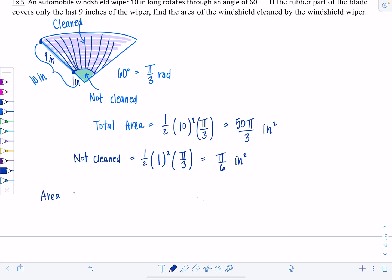That means the area cleaned is the difference between the two. It's the total area, 50π over 3 minus π over 6. If I get a common denominator, that's 100π over 6 minus 1π over 6. So that's 99π over 6. We can reduce that. That's 33π divided by 2 inches squared. That's the exact answer. If you wanted to plug it in your calculator, you could, but they didn't ask for a decimal approximation.